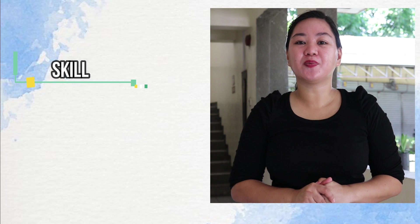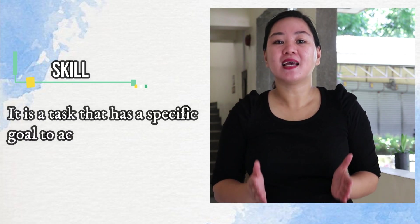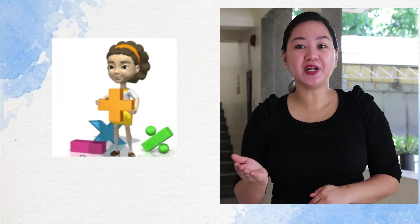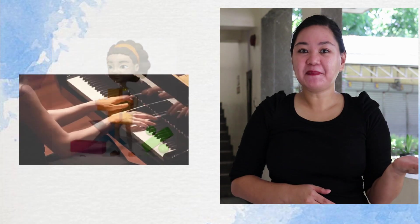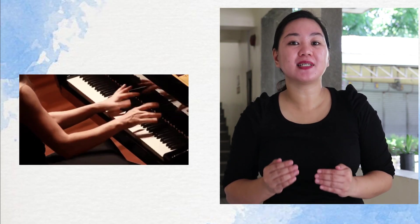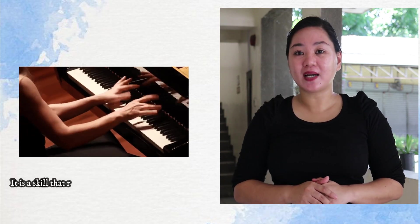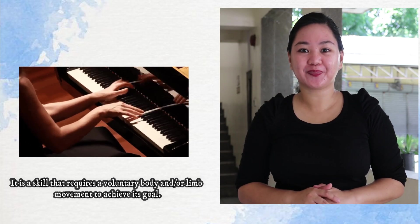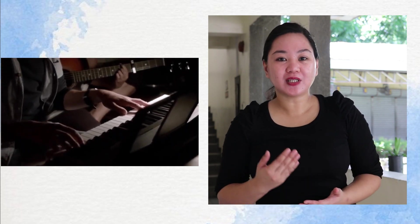Skill is a commonly used word — it is a task that has a specific goal to achieve. For example, we say that addition is a fundamental skill of mathematics, or playing piano is a skill that takes practice. Of these two examples, the skill of piano playing includes a motor skill because it requires voluntary body and limb movement to achieve the goal. The skill of playing piano involves striking the correct key in the proper sequence and at the appropriate time, requiring finger and hand movement to achieve that goal.